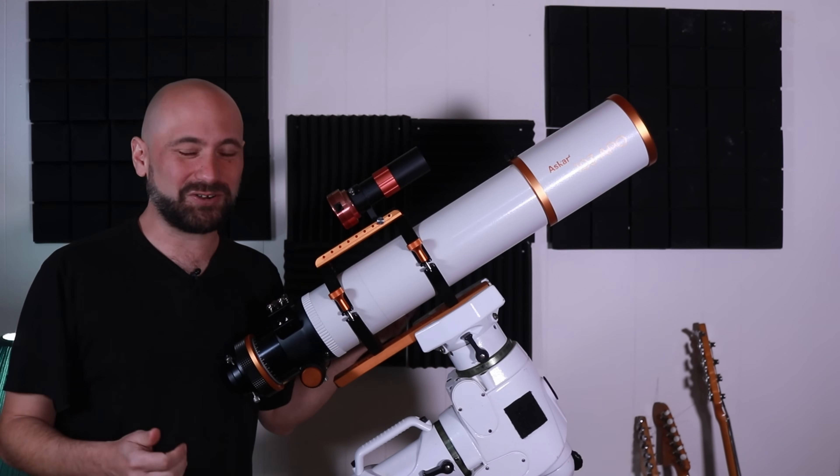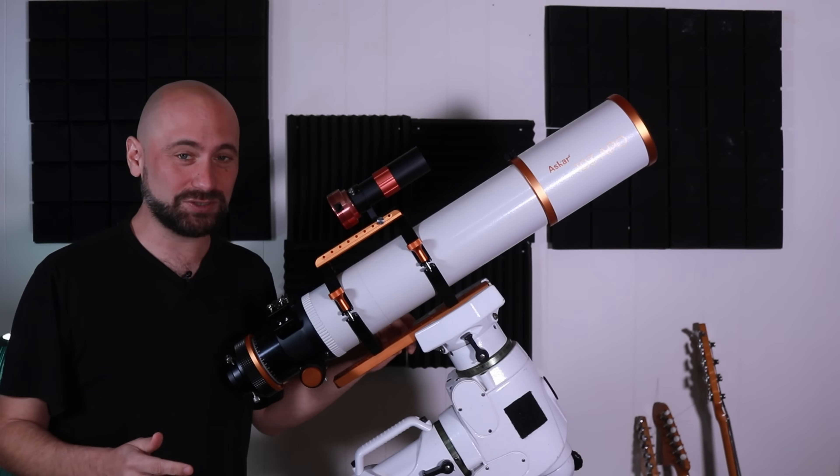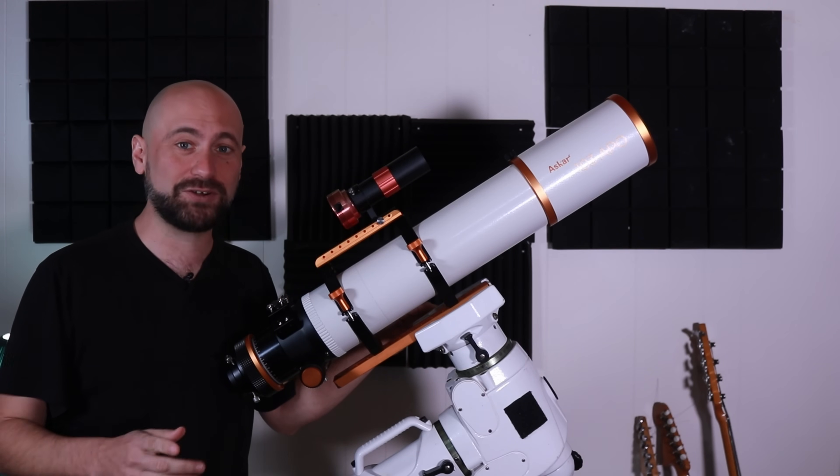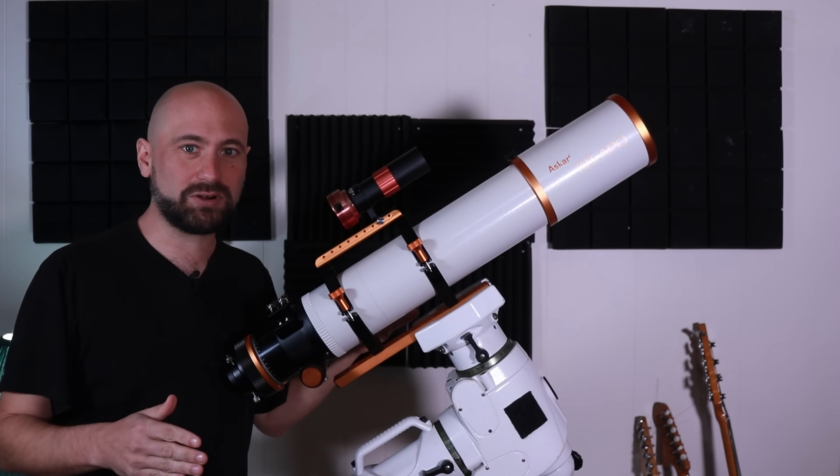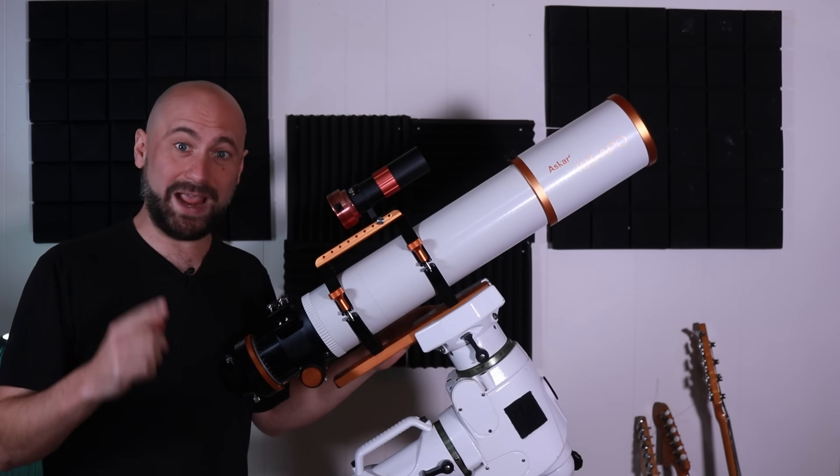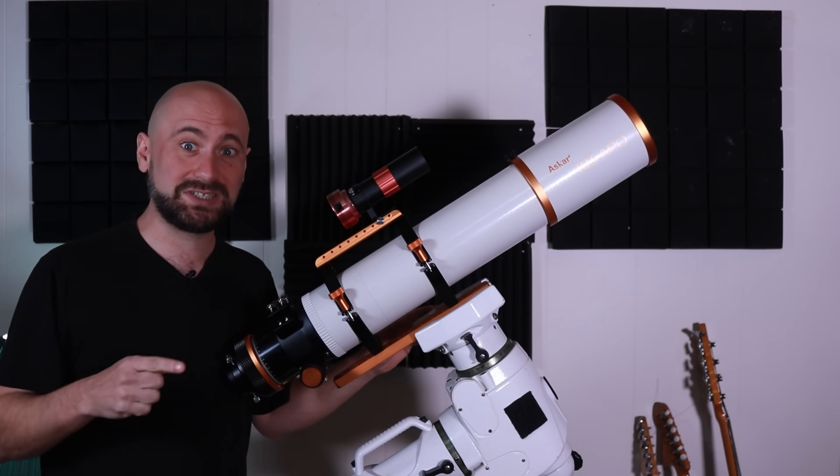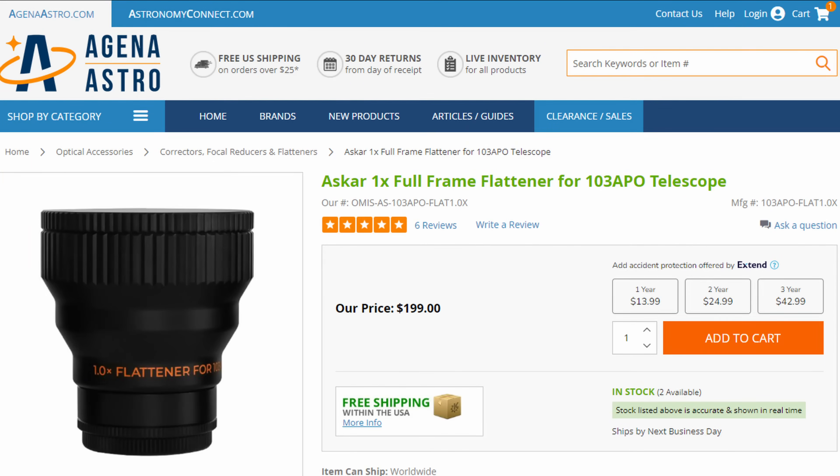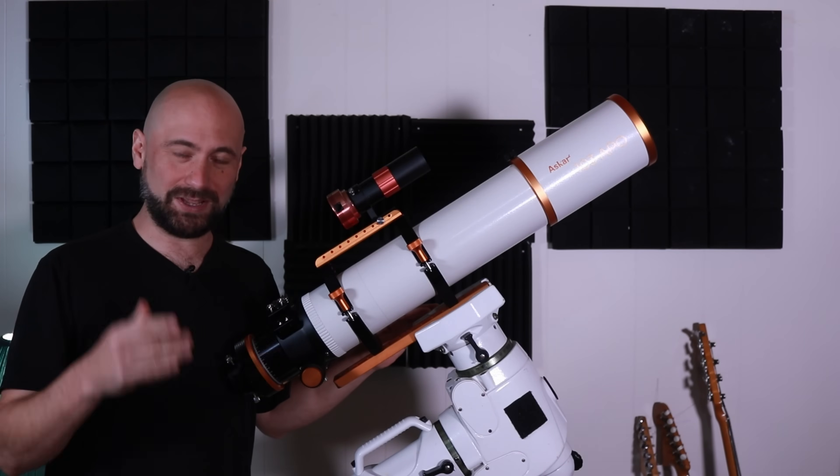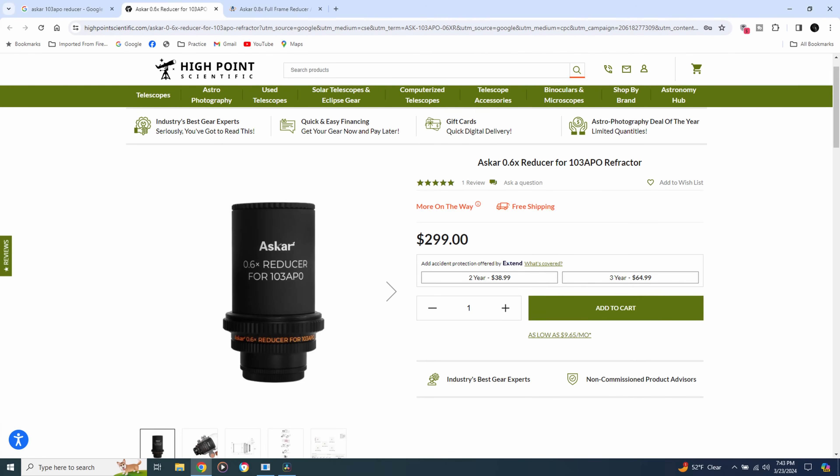Now, of course, most of us are here for astrophotography and not visual astronomy, so if you want to take pictures through this telescope, you're going to need to buy a flattener or one of the two reducers. This telescope is marketed as being very versatile because they make those three accessories. The 1x flattener, the 0.8 reducer, and the 0.6 reducer. The 1x flattener keeps it at its native focal length of 700 millimeters. The 0.8 reducer brings it down to 560 millimeters at f5.4, and the 0.6 reducer brings it down to 420 millimeters at a very fast f4.